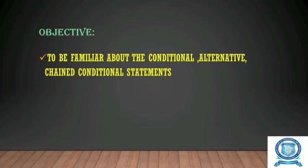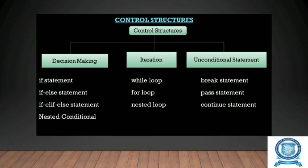The objective of learning this topic is to be familiar about the conditional statements, the alternative statements, and the chained conditional statements. Now let us see about the control structures. The control structures can be divided into 3 categories: the decision making statements, the iteration statements, and the unconditional statements.